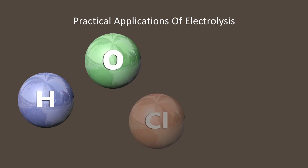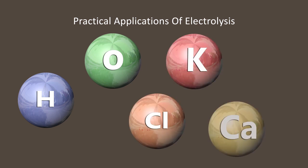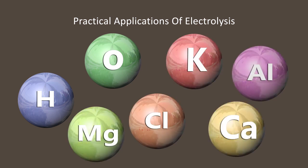Electrolysis has so many practical applications. It is a process used in the large-scale production of hydrogen, oxygen, chlorine, potassium, calcium, magnesium, aluminum, etc.